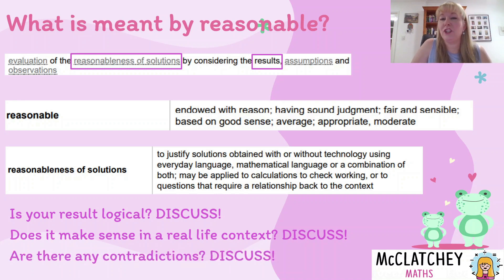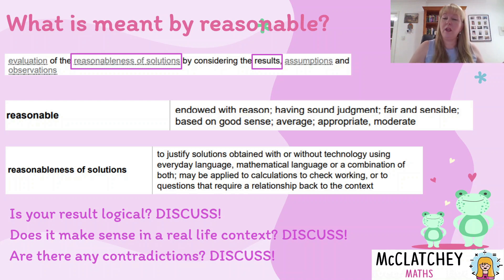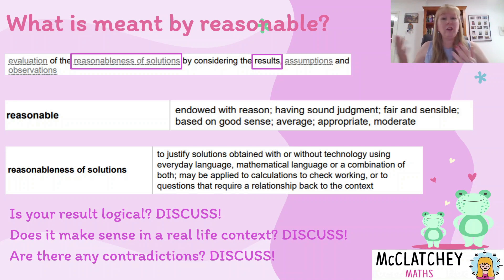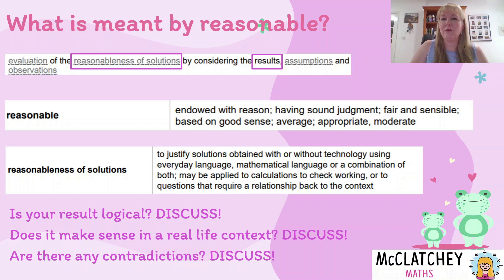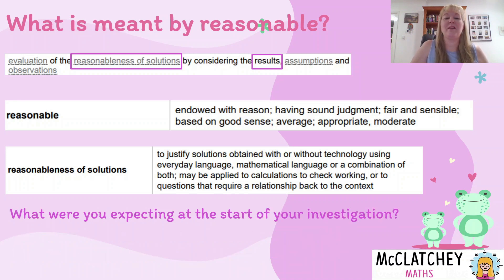Also think about any contradictions within your models. For example, if one graph proves one thing but a second graph with a different data set proves something else, that could be a very real life occurrence. What might have caused those contradictions? You need to think quite deeply when doing this evaluation — it really is a time for thinking and putting those thoughts into writing.